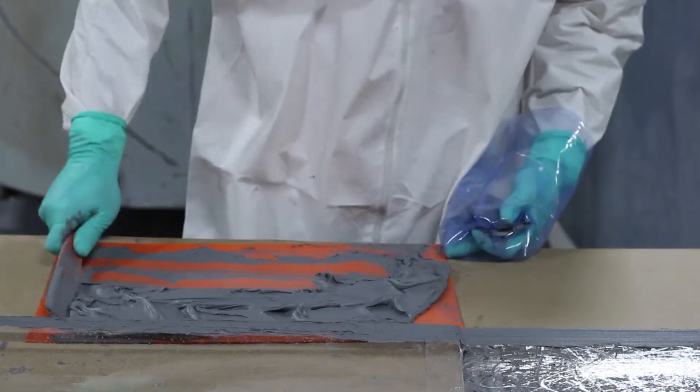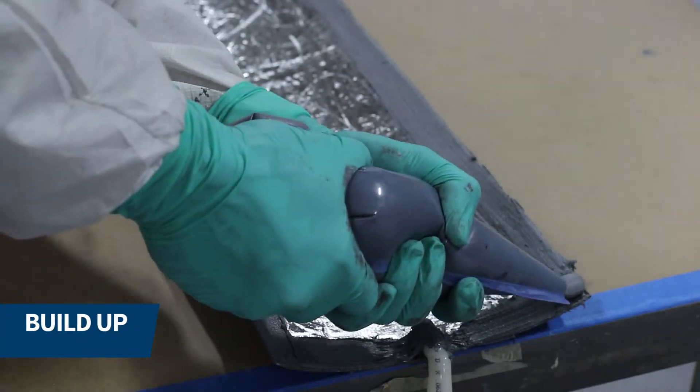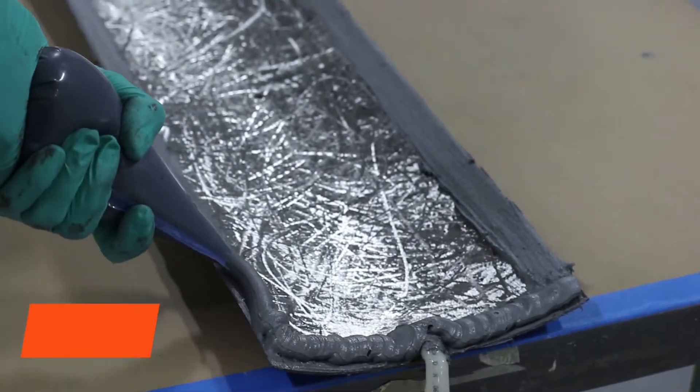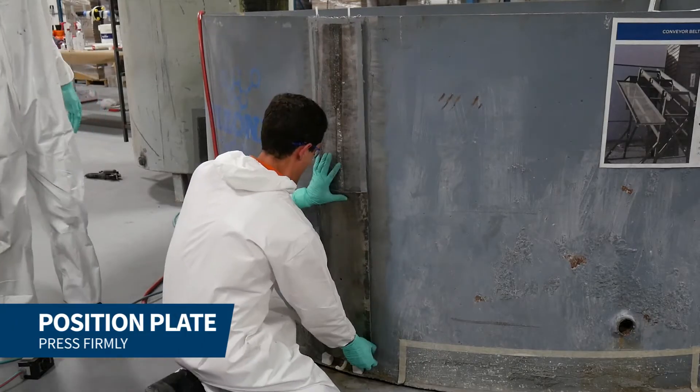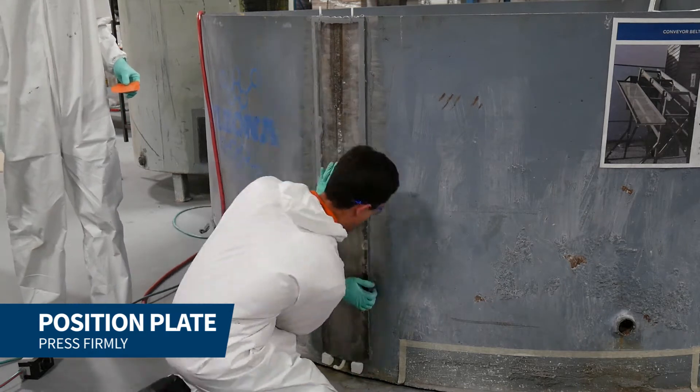Next, Belzona 1161 was used to build up the material to ensure a proper seal. The plate was then positioned and firmly pressed onto the repair area.